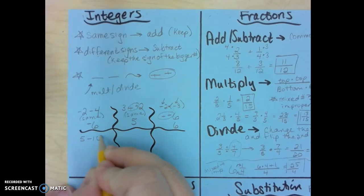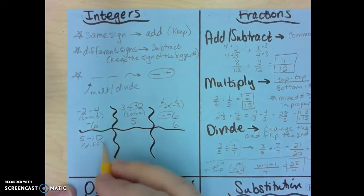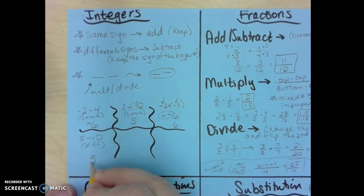All right, 5 minus 10. This is a positive 5, this is a negative 10, so these are different signs. So different signs subtract. 10 minus 5 is 5. This is the big number, and so since my big number is negative, my answer is negative.